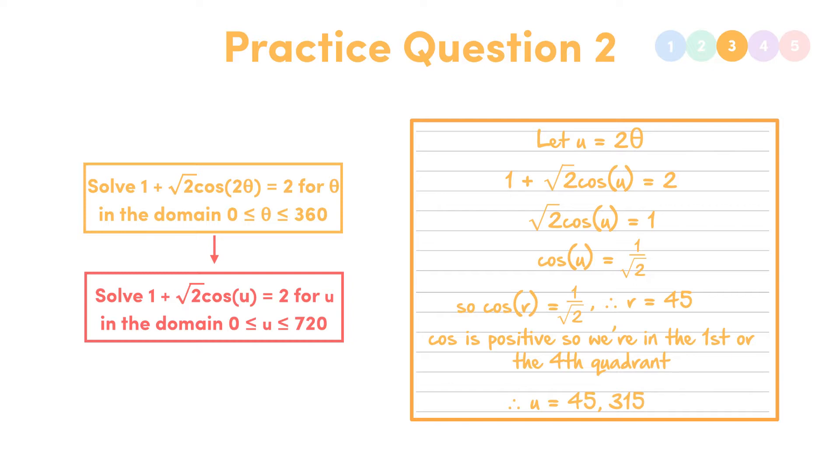So we're done, right? Not exactly. Because remember, our domain is for u between 0 and 720. So that means, considering the second rotation, u could also be 405 or 675 degrees. Because these are just 360 plus our original answers.